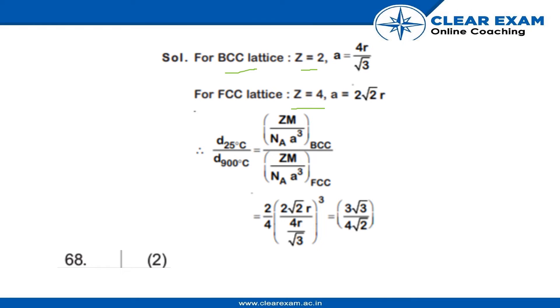So if we make the ratio of density at 25 degrees Celsius at room temperature to that at 900 degrees Celsius, we can just divide the density of both. So if we put the values of Z and A in this one,